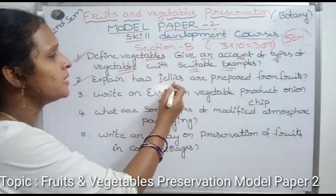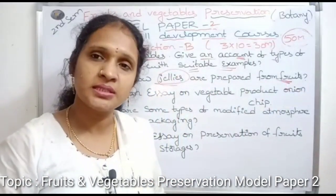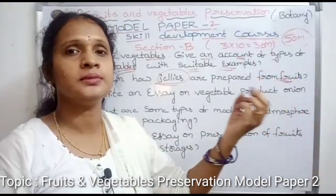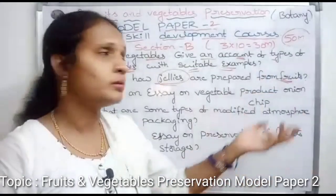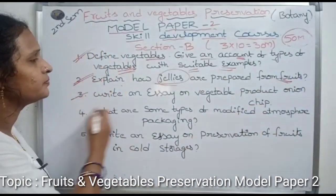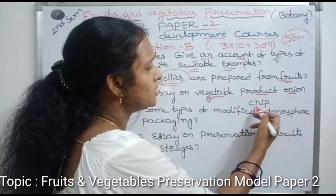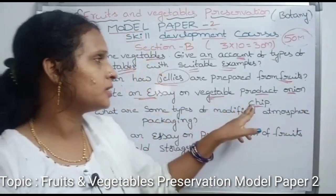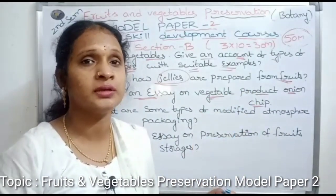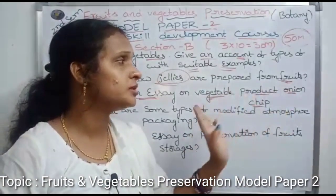Second question: explain how jellies are prepared from fruits — including jellies, juices, and syrups prepared from fruits. Third question: write an essay on the vegetable product onion chips — discuss the onion chips product and whatever the vegetable product preparation involves.